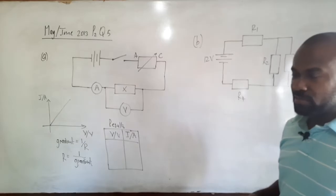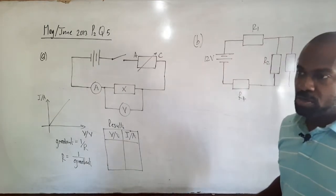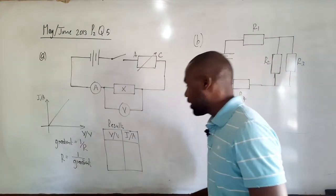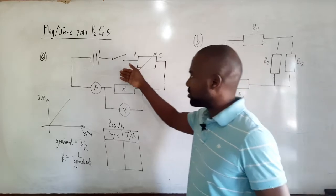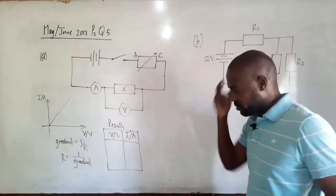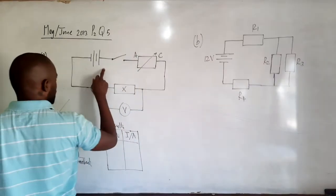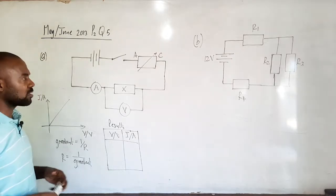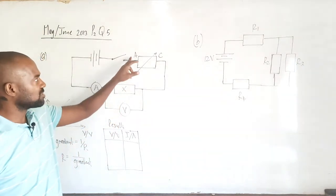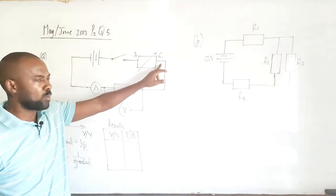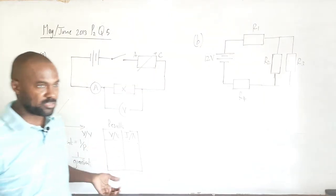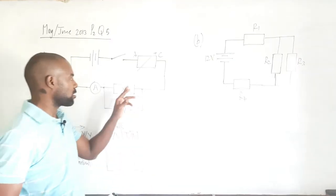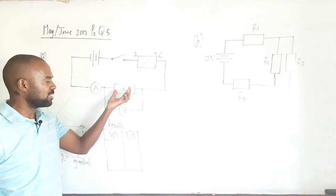Part A says: describe an experiment that can be used to determine the resistance of a metallic conductor. I've drawn a circuit which can be used to conduct such an experiment. In this circuit we have a battery, a switch, and a variable resistor. With the variable resistor we're connecting one of the fixed terminals and the slider or wiper terminal, so we can use it as a variable resistor and hence vary the total circuit resistance. We also have our conductor, labelled as component X.